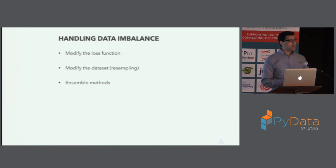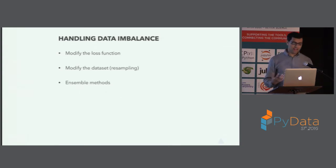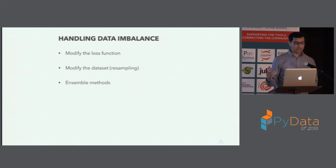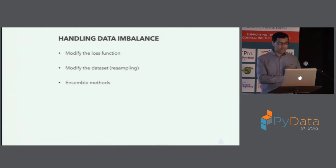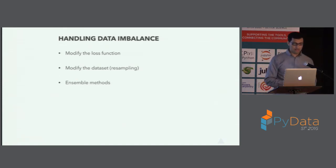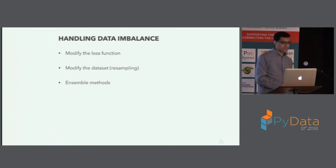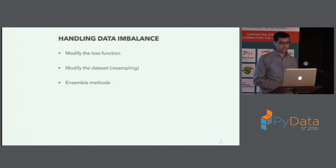This talk is basically a survey of techniques presented via a case study on a synthetic dataset. The main kinds of techniques we'll cover are: modifying the loss function, modifying the dataset itself using resampling techniques — which will form the bulk of the talk — and finally a couple of ensemble methods.